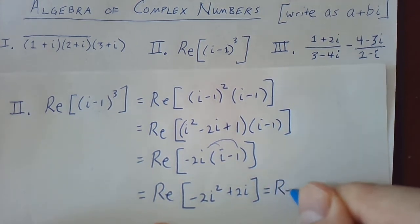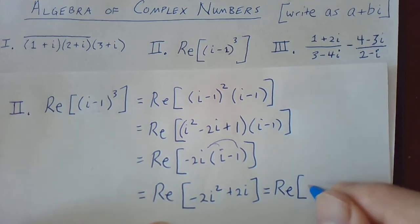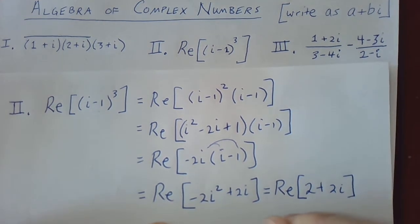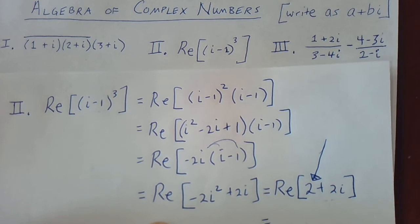And this will be the real part of—well, notice that this is the real part. i squared is negative 1. Negative 1 times negative 2 is positive 2.